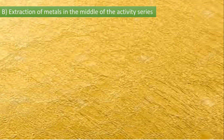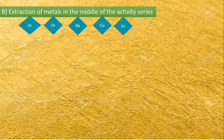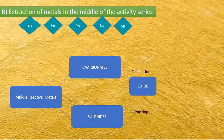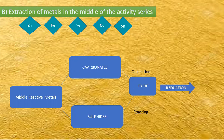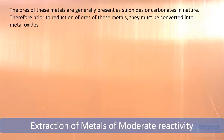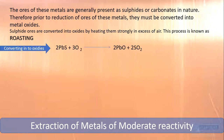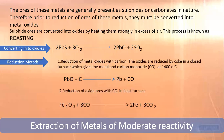In our previous class, we learned about the middle reactive elements in the form of carbonates and sulfides. By roasting, they are converted into oxides, and then the oxides are reduced to get the metals. The important concept of roasting has been repeated many times in examinations, and we covered it in detail previously.